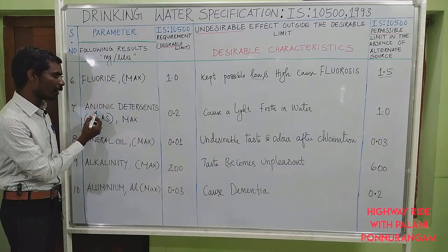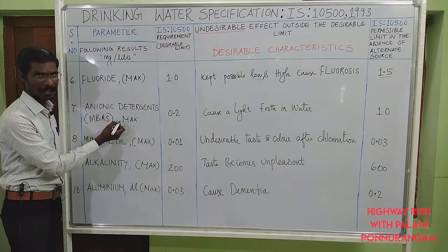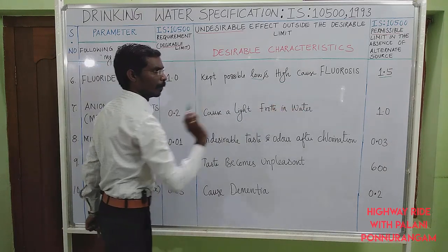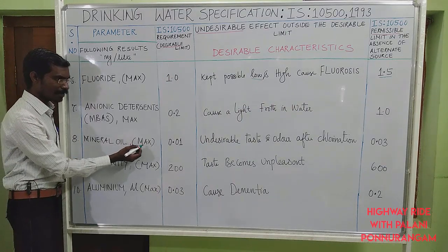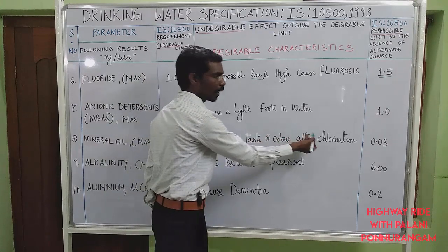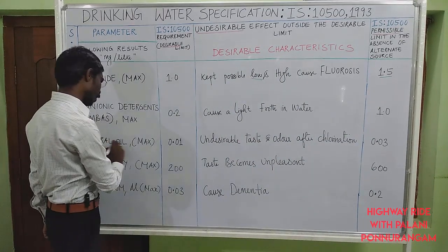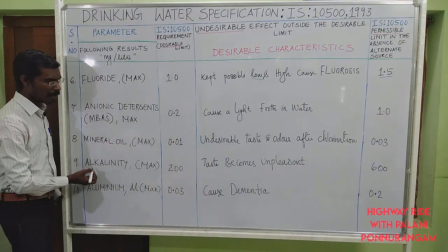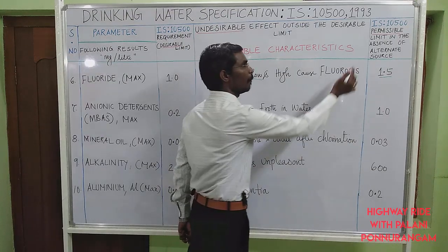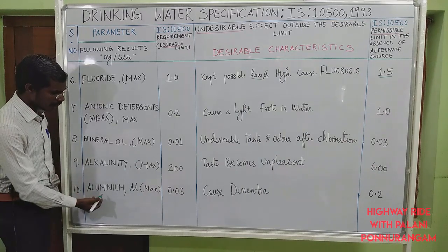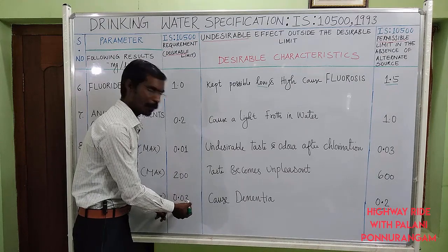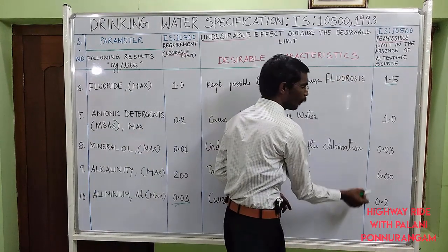The seventh desirable characteristic is anionic detergent (MBAS) — maximum desirable limit is 0.2, causing foaming in water; maximum permissible limit is 1. The eighth is mineral oil — maximum desirable limit is 0.01; beyond this, it gives undesirable taste and odor after chlorination; maximum permissible limit is 0.03. The ninth is alkalinity — maximum desirable limit is 200; above 200, taste becomes unpleasant; maximum permissible limit is 600. The tenth is aluminum (Al) — maximum desirable limit is 0.03; beyond this limit, it may cause dementia; maximum permissible limit is 0.2.